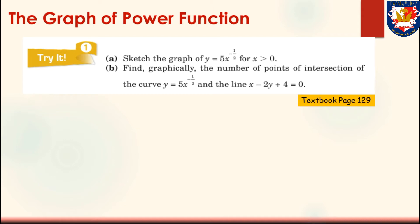Try 1, Part A: sketch the graph of y equals 5x to the power of negative 1 over 2, for x greater than 0. Part B: find graphically the number of points of intersection of the curve y equals 5x to the power of negative 1 over 2 and the line x minus 2y plus 4 equals 0. Here is the solution.